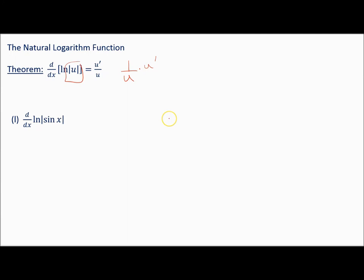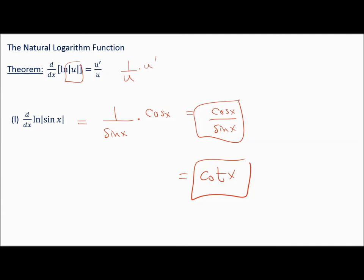If we find the derivative of natural log of the absolute value of sine of x — you'll see that often because you can't take the logarithm of a negative number, so the absolute value makes it possible. It's 1 over sine of x times cosine of x, which is cosine of x over sine of x. You know that is the cotangent of x.